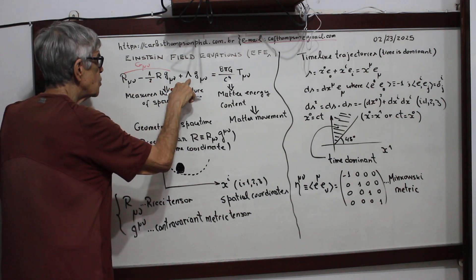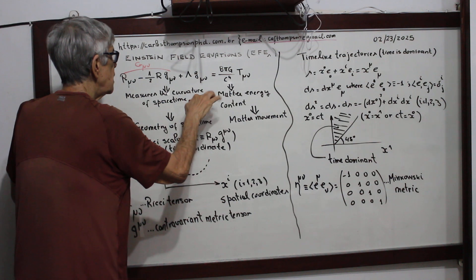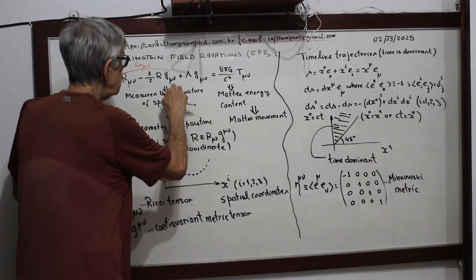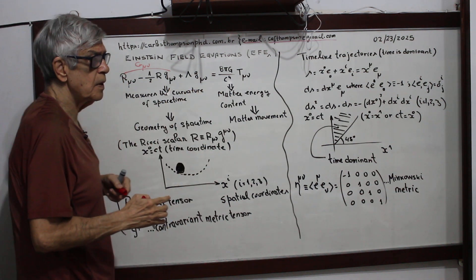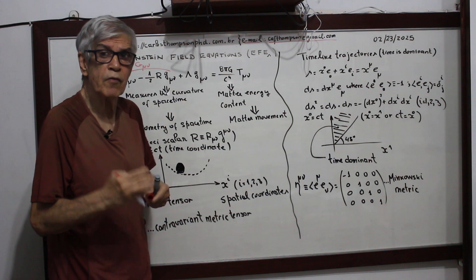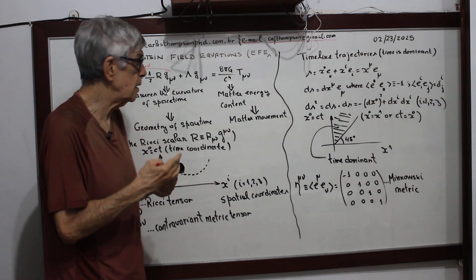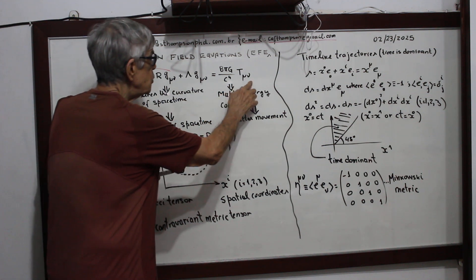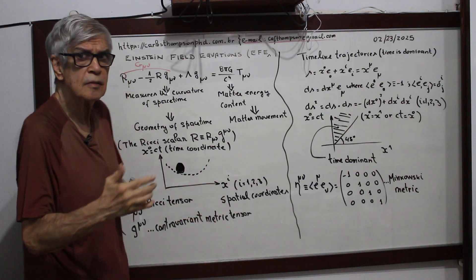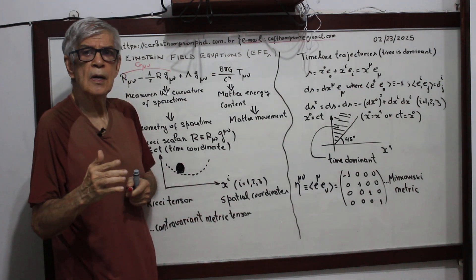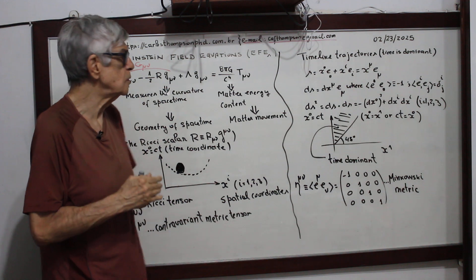This is the cosmological constant. G-mu-nu is the metric, the covariant metric. And T-mu-nu, as I said before, is the energy-momentum stress tensor.